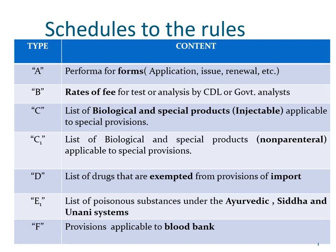Starting with Schedule A — Schedule A gives the pro forma of the different forms for application, forms in which licenses are issued, forms in which renewal is done, etc. So if you need details about Form 9, Form 20A, Form 21B, you have to go to Schedule A.